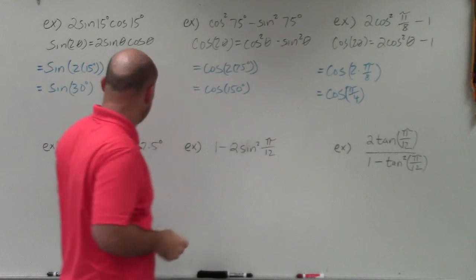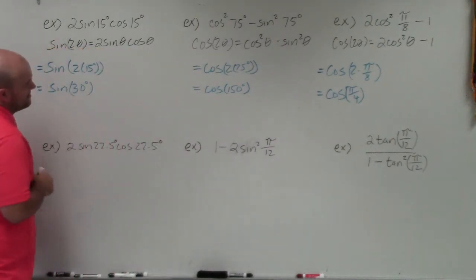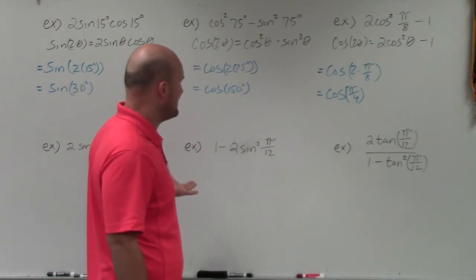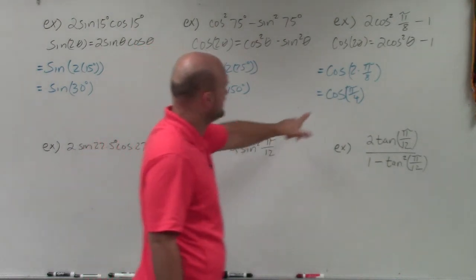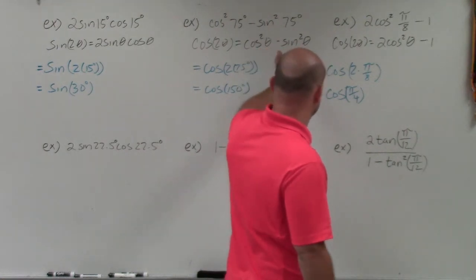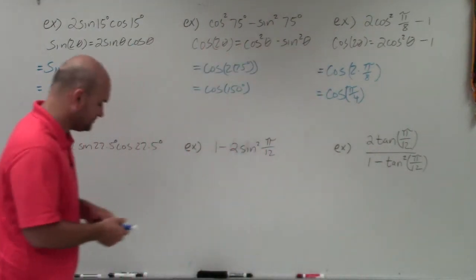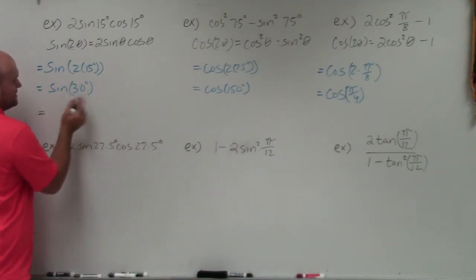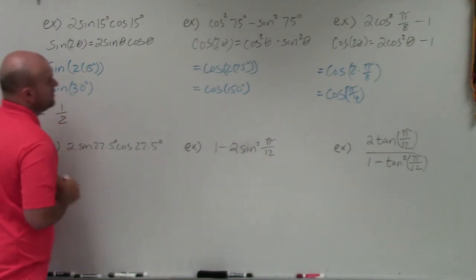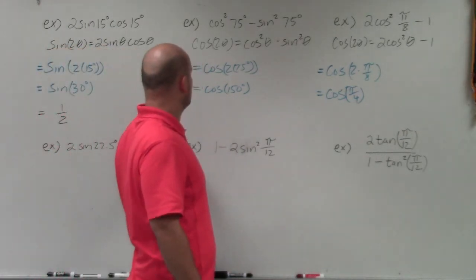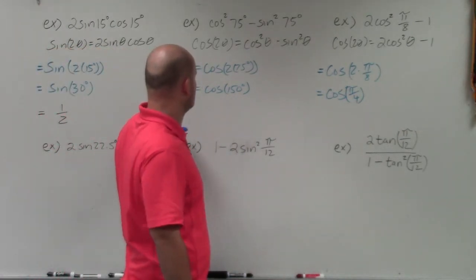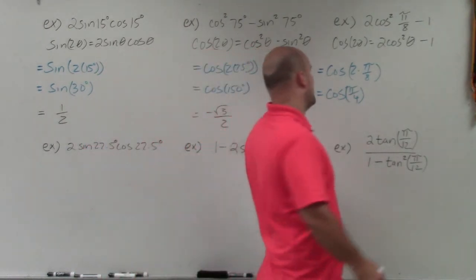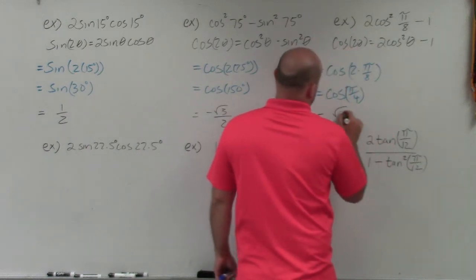Let's evaluate all of these using the unit circle. The sine of 30 degrees equals 1/2. The cosine of 150 degrees — that's 30 degrees off the y-axis — equals negative square root of 3 over 2. The cosine of π/4 equals square root of 2 over 2.